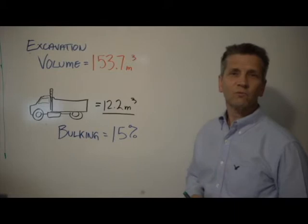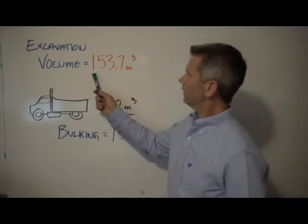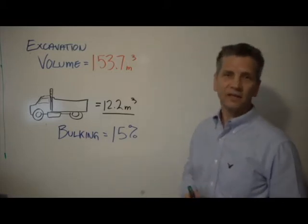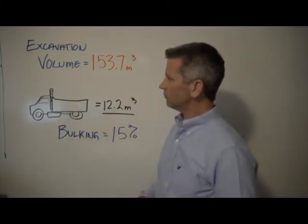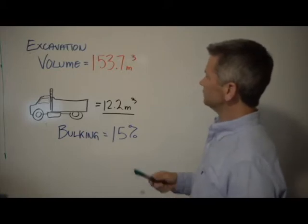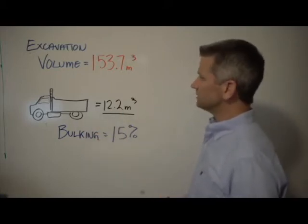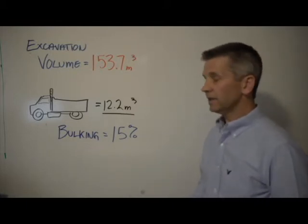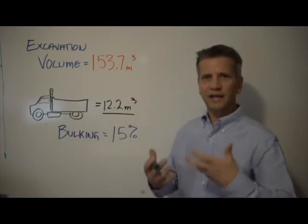Okay, just one more pretty easy step. Now we have to figure out if we have 153.7 cubic meters of dirt, we can't keep it on the job site, so we have to calculate how many trucks we have to order to get our dirt off site. So in this case here, our trucks have 12.2 cubic meters, that's how much each truck will carry, and we have a bulking factor of 15 percent.